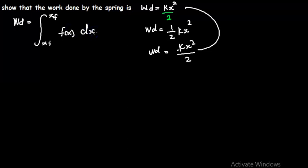This is how it is mathematically expressed. The WD is actually standing for work done, and f of x is the force as the function of displacement, x.